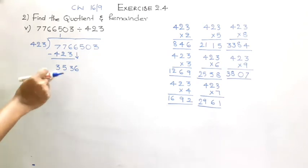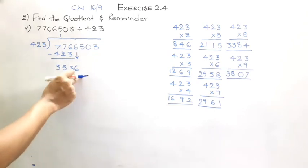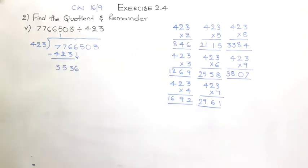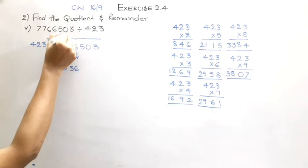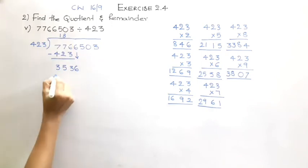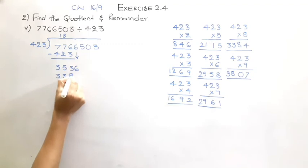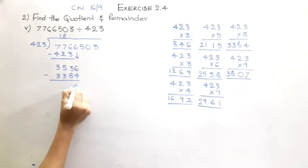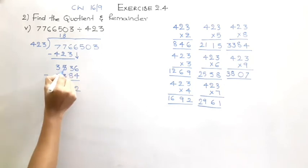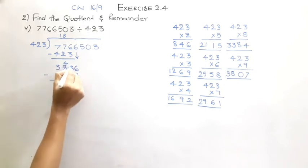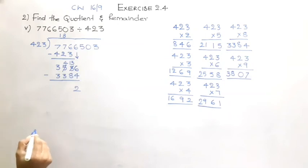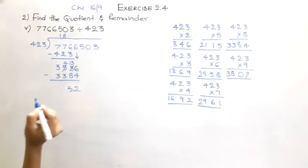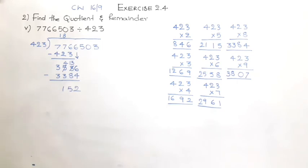Check the table for 423 for the value close to 3536. It is 8 times, giving 3384. Now let us do the subtraction: 6 minus 4 is 2, 6 minus 4 is 2. As we can't subtract 8 from 3, borrow 1 from the previous place so it becomes 4 and this becomes 13. 13 minus 8 is 5, 4 minus 3 is 1.